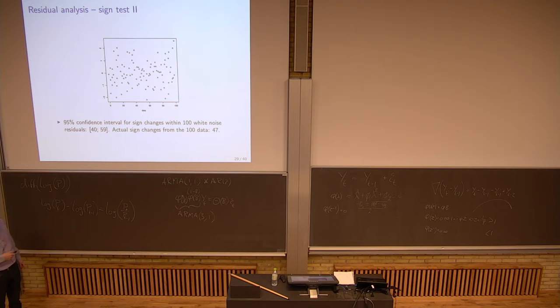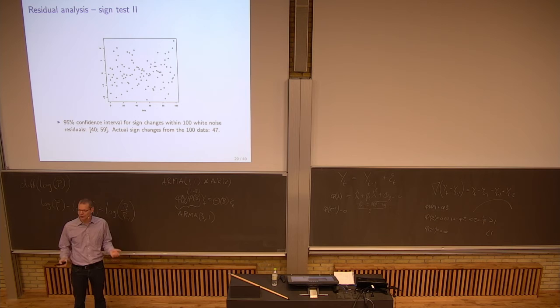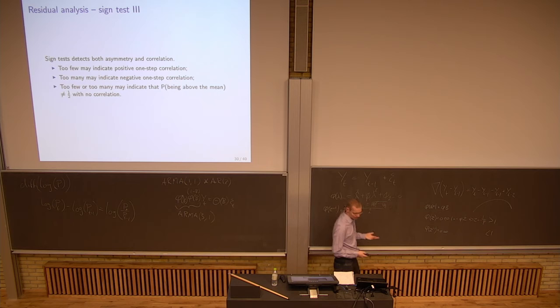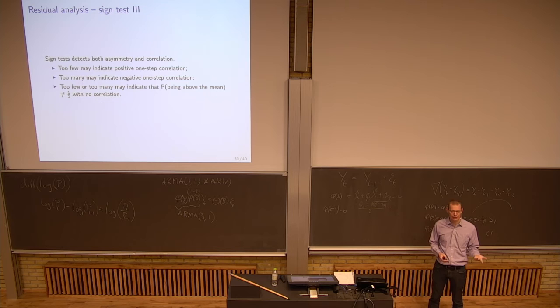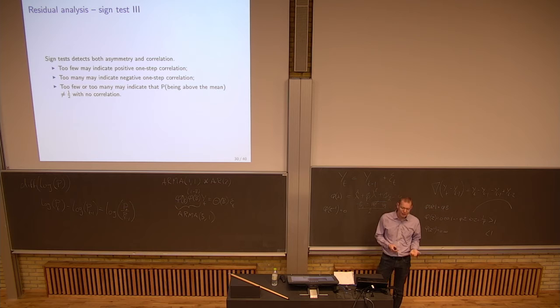For the data we have here — 100 white noise residuals — the confidence interval becomes between 40 and 59. If we have 47 changes in sign, we cannot reject that the probability of changing sign is 50%. If there are too few changes, it could indicate there is positive correlation left — you will be above for a period, then below for a period. If there are too many, you could have negative correlation — jumping up and down too frequently — indicating there is something more to do. You would also see that if you examine the autocorrelation function.